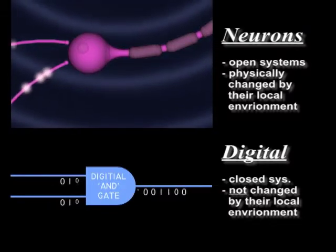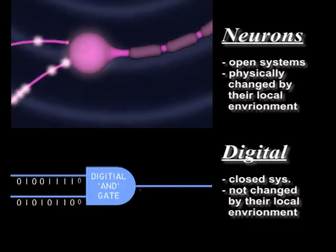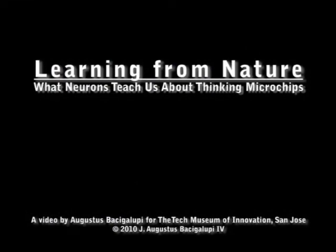Understanding these differences helps to better understand microchips and brains, computation and thought. With this understanding you can help improve both.